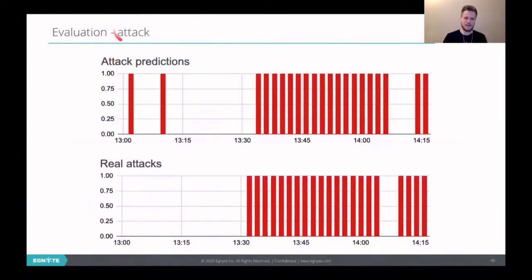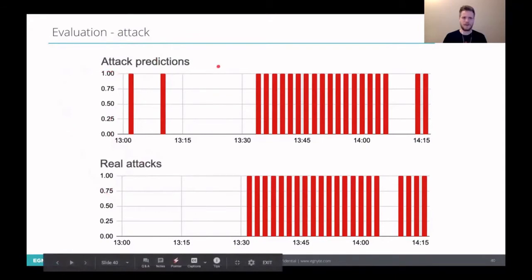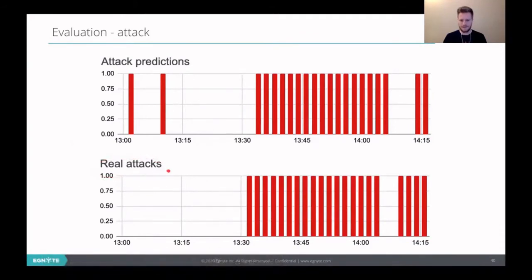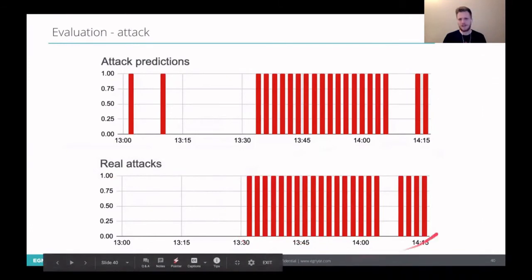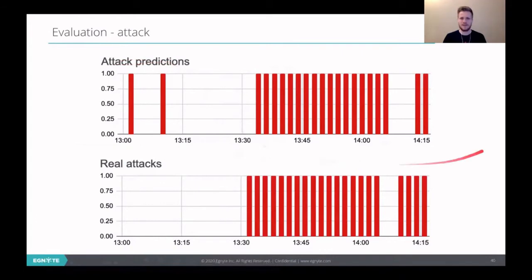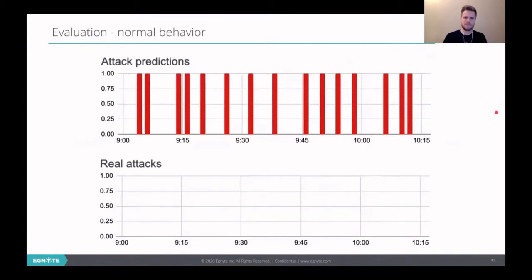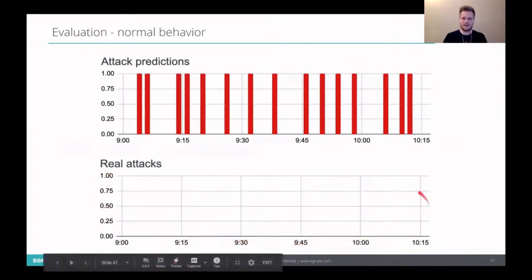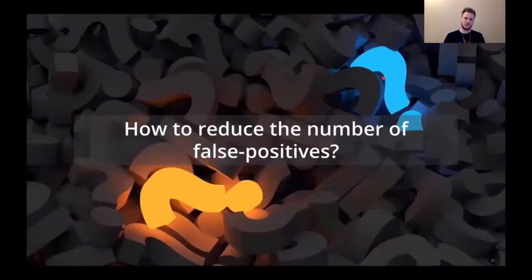Here we can see evaluation on attack data. We can see two charts here. The upper one is about our predictions. The bottom one is about real attacks. This red bar indicates that there is an attack here. The empty space that there is no attack. So first let's look at real attacks. We can see that here actually is an ongoing attack. Let's look at our predictions and we can see that we detect it pretty well. We are missing maybe first two minutes, but it doesn't matter. We also here can see some false positives. So let's make another evaluation on normal behavior data. We can see that there's no ongoing attacks here, but we detect quite a lot of attacks. And we should do something with that.